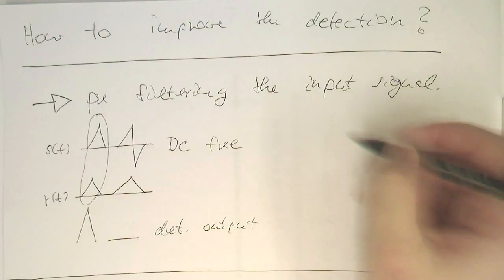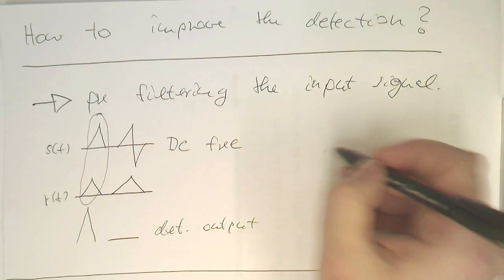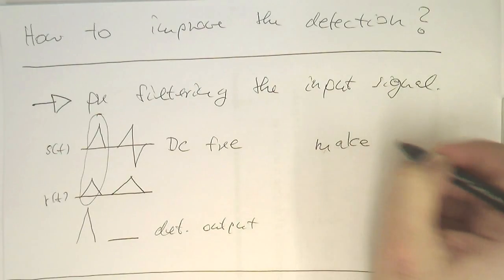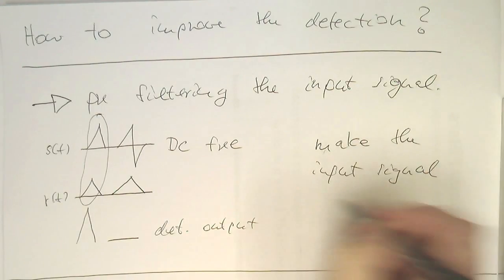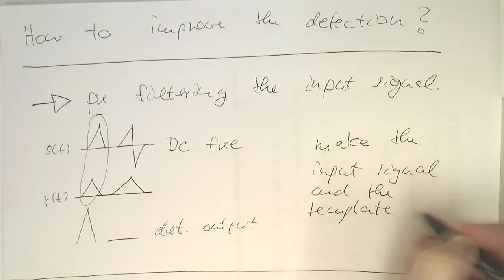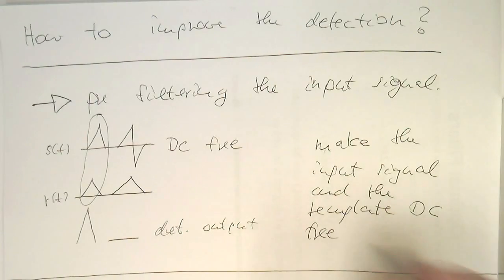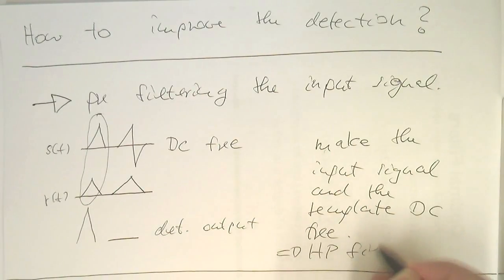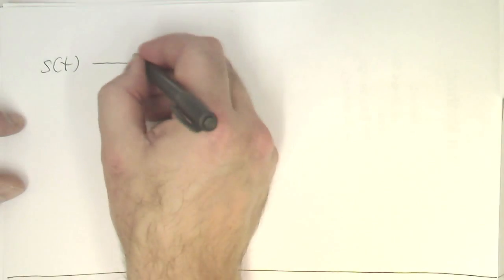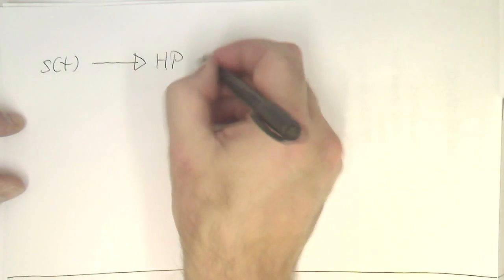And so, therefore, a very good strategy is to make the input signal and the template DC-free. So, for example, with a high-pass filter. So, now, we've done some pre-processing of the signal. So, we've got our S of T. So, we've done a high-pass filter. So, essentially, DC removal.